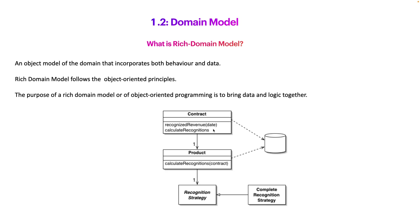We are going to implement a rich domain model. We are going to bring all the data and the business logic into the object that represents that functionality — for example, our customer. Contract is a rich domain model because it has methods, behaviors, and data. It's not delegating any behavior — for example, the creation or the calculation of recognitions of a contract — to a service. We bring the data and the logic together following object-oriented programming principles. This is what some call a rich domain model, but we are going to call it simply a domain model.